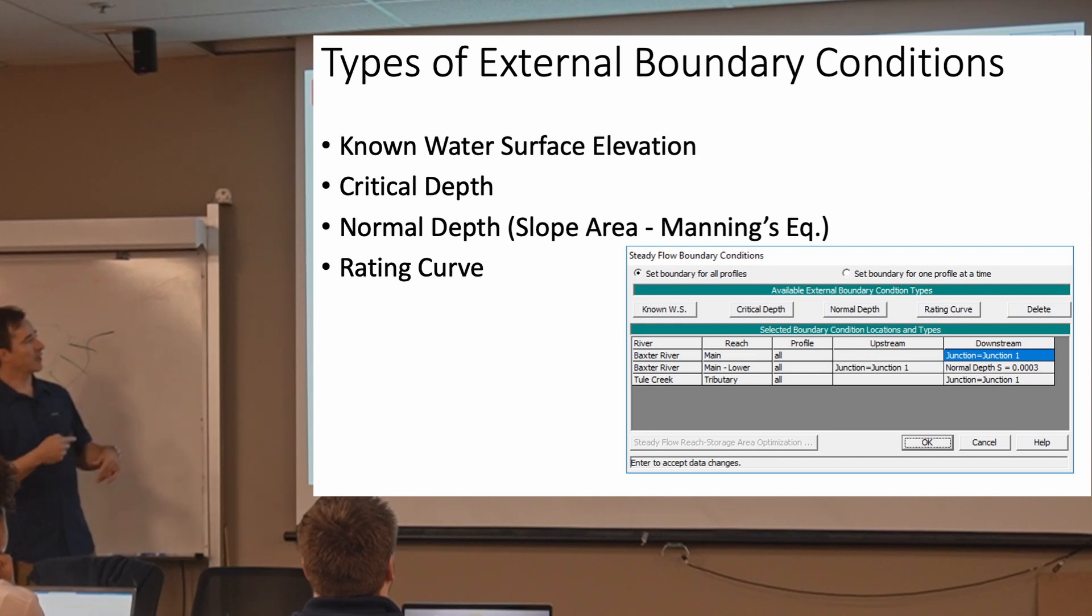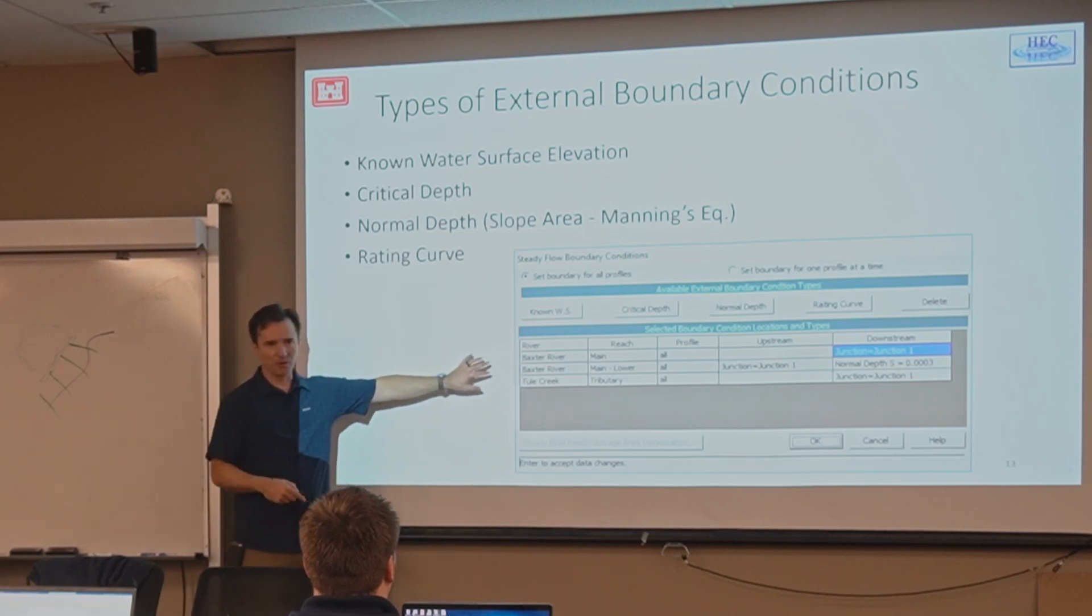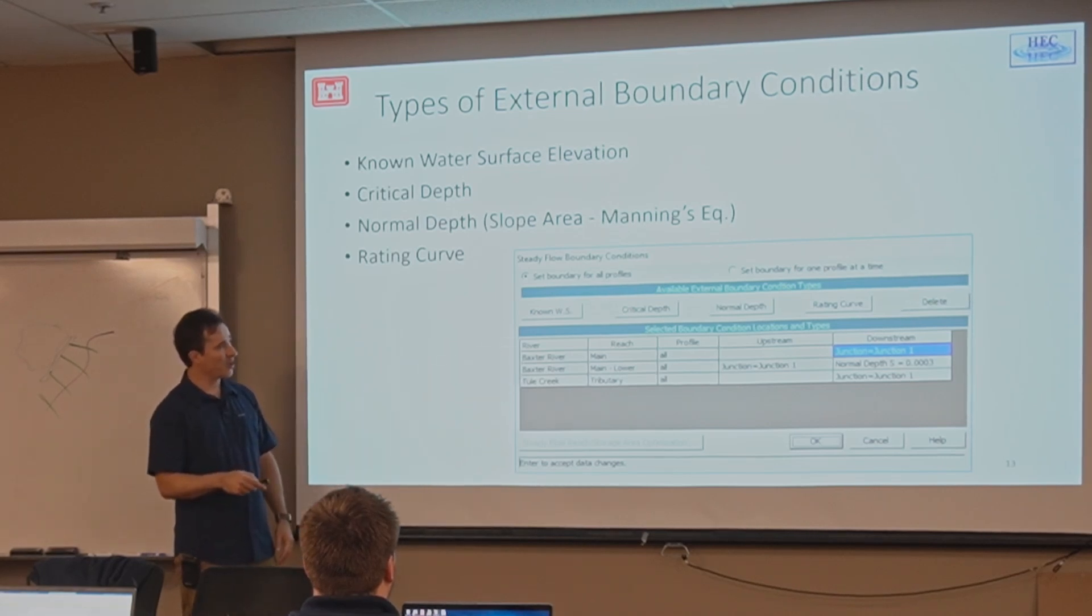And then this rating curve, which is a stage flow curve. And then based on your flow, it'll extract what the stage should be at that location. Your boundary locations, your external boundaries, are always going to be there for you when you open this. And then you can select which boundary condition type you want. If you want internal boundary conditions, you can add them.